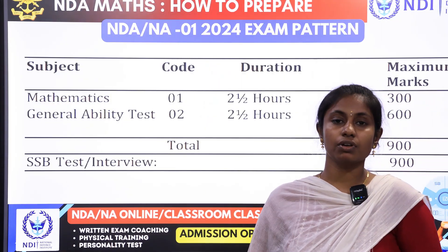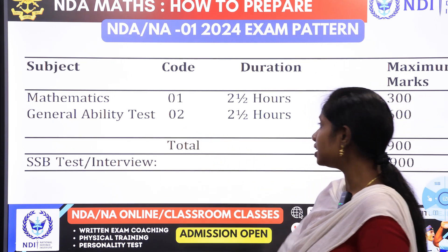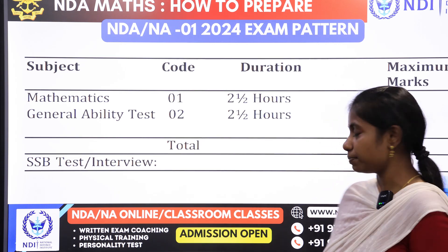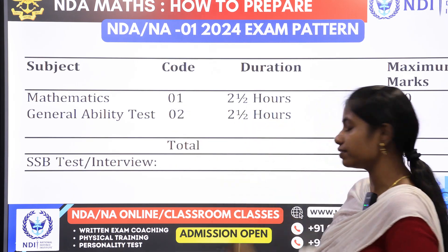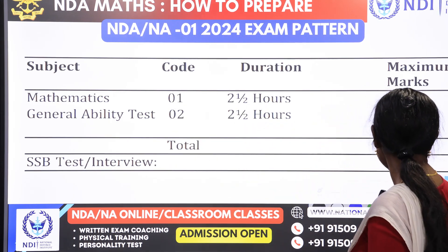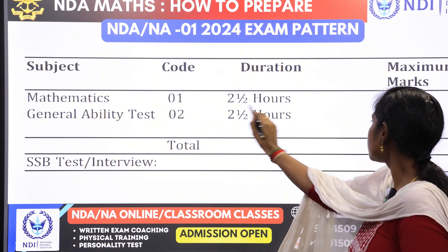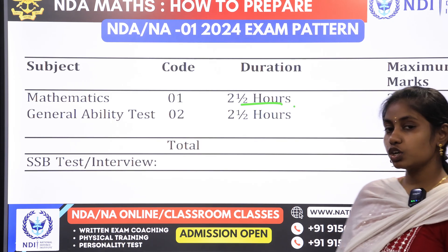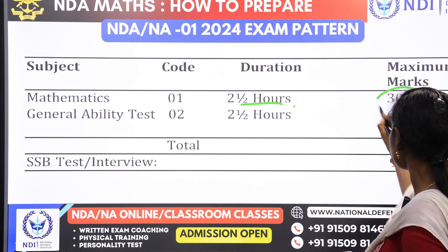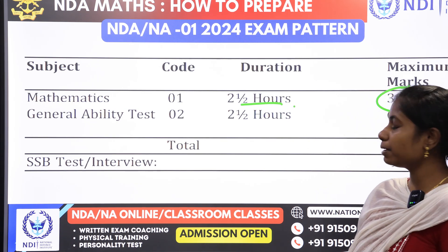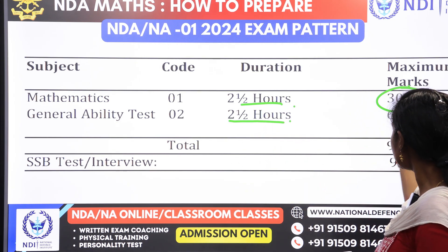In NDA maths, there are two papers. The first paper is completely a maths paper, and the second paper is a general aptitude test paper. The first paper has two and a half hours timing with a maximum of 300 marks. The GAT paper also has two and a half hours timing, but the marks are 600.